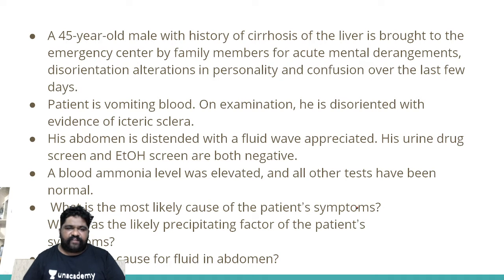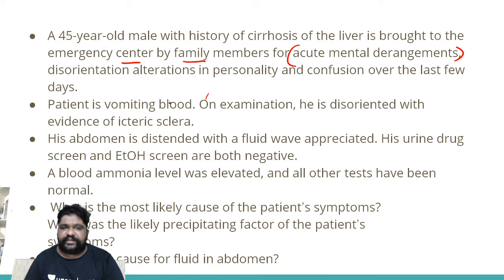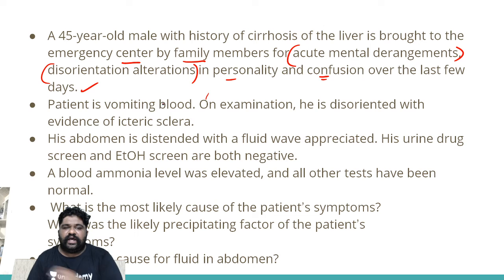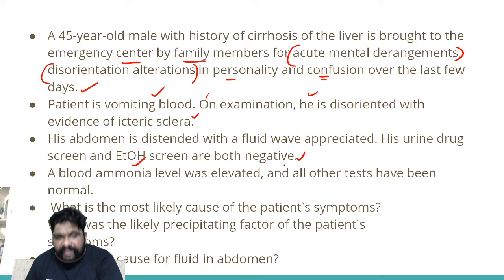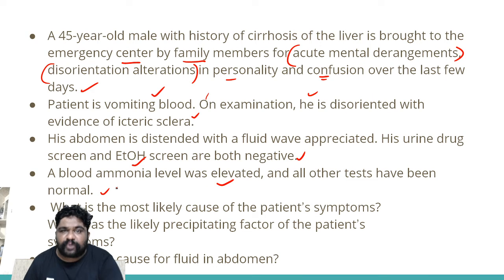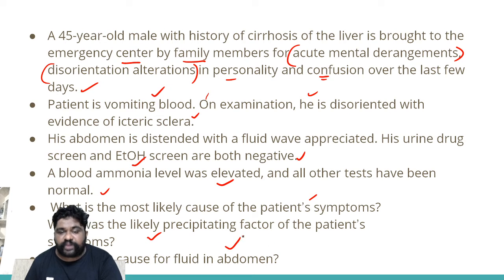Let's go to the first question of the day. A 45-year-old male with history of cirrhosis of the liver is brought to the emergency center by family members for acute mental derangements, disorientation, alterations in personality, and confusion over the last few days. The patient is vomiting blood. On examination, he is disoriented with icteric sclera, a distended abdomen with a fluid wave appreciated. Urine drug screen and ethanol screen are both negative. Blood ammonia level was elevated and all other tests are normal. What is the most likely cause of the patient's symptoms, the precipitating factor, and the cause of fluid in the abdomen?